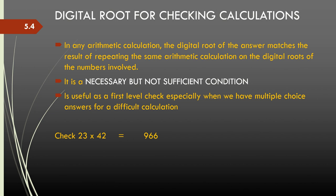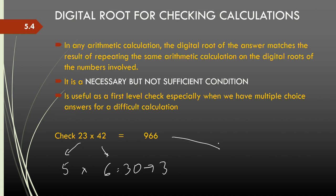There is one more interesting property: we can use digital roots to check arithmetic calculations. If we perform the same arithmetic operation on the digital roots of the numbers involved, the digital root of the result should match. This is a necessary but not sufficient condition. For example, to check 24 times 42 equals 966: digital root of 24 is 6, digital root of 42 is 6, so 6 times 6 is 36, and digital root of 36 is 9. Digital root of 966: cancel 9, then 6 plus 6 is 12, and 1 plus 2 is 3.